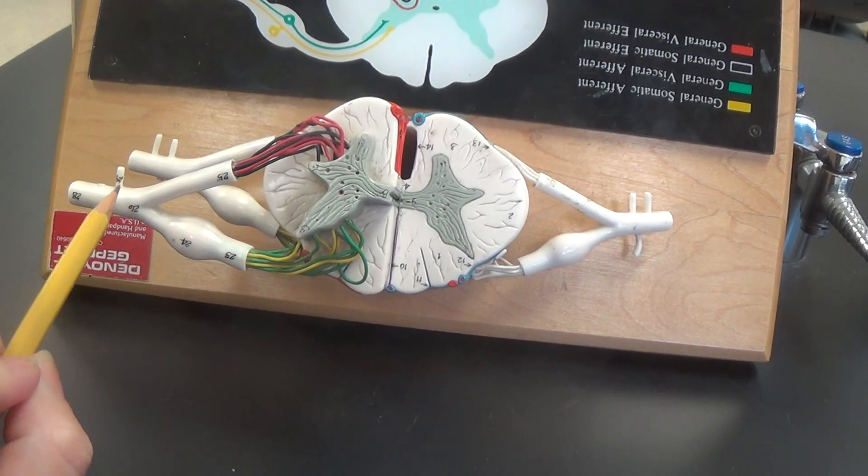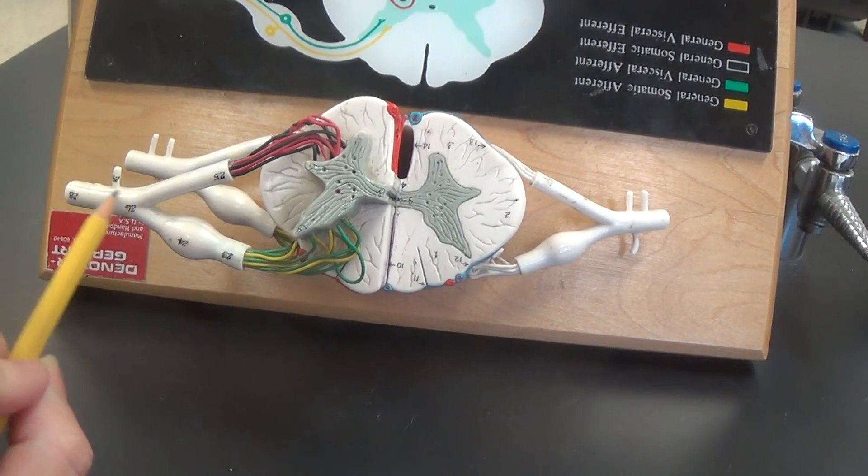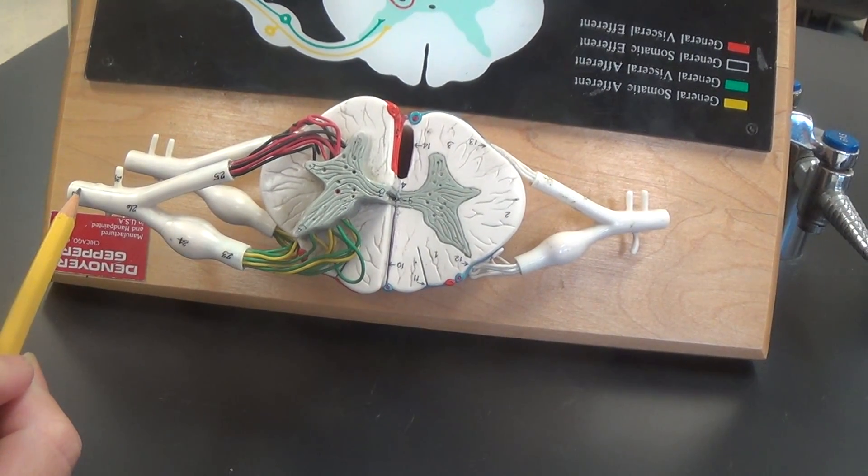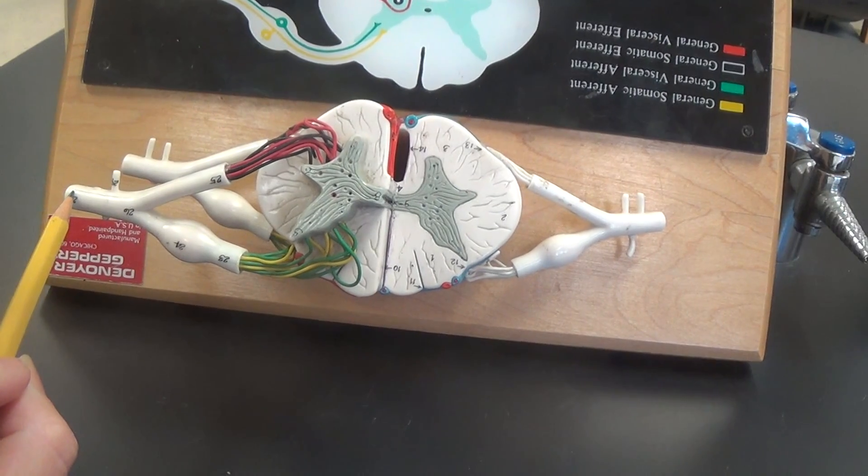Where they combine, off on the side, this is a spinal nerve. Keep in mind this is what you have 31 pairs of.